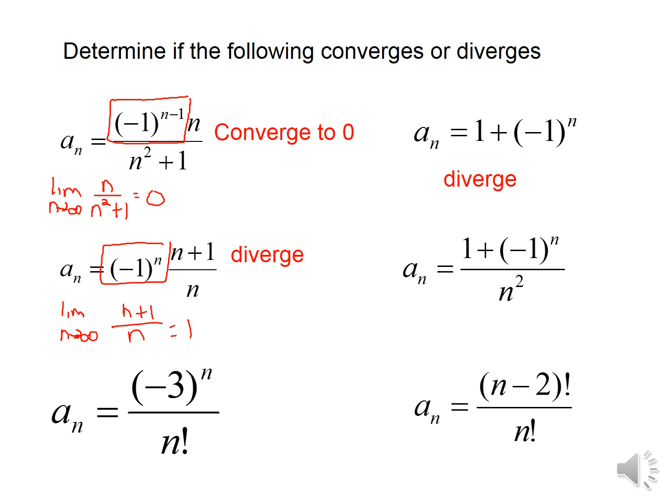This next sequence alternates because we can write it as (−1)^n times 3^n over n factorial. It bounces back and forth, but we know that n factorial grows faster than 3^n. So since n factorial grows faster than the exponential, the expression goes towards zero and therefore this sequence converges to zero.